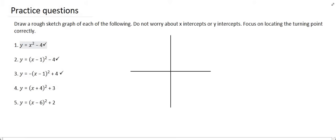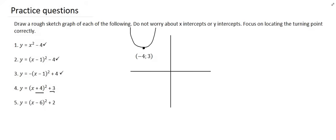With number four, the number in the front is positive, so it's a happy graph. This plus 4 means that it's actually gone 4 units to the left, and this plus 3 means 3 units up. So it's going to be 4 units left and 3 units up. The turning point, which always starts at (0, 0), gets moved 4 units left, 3 units up, and it's a happy graph.